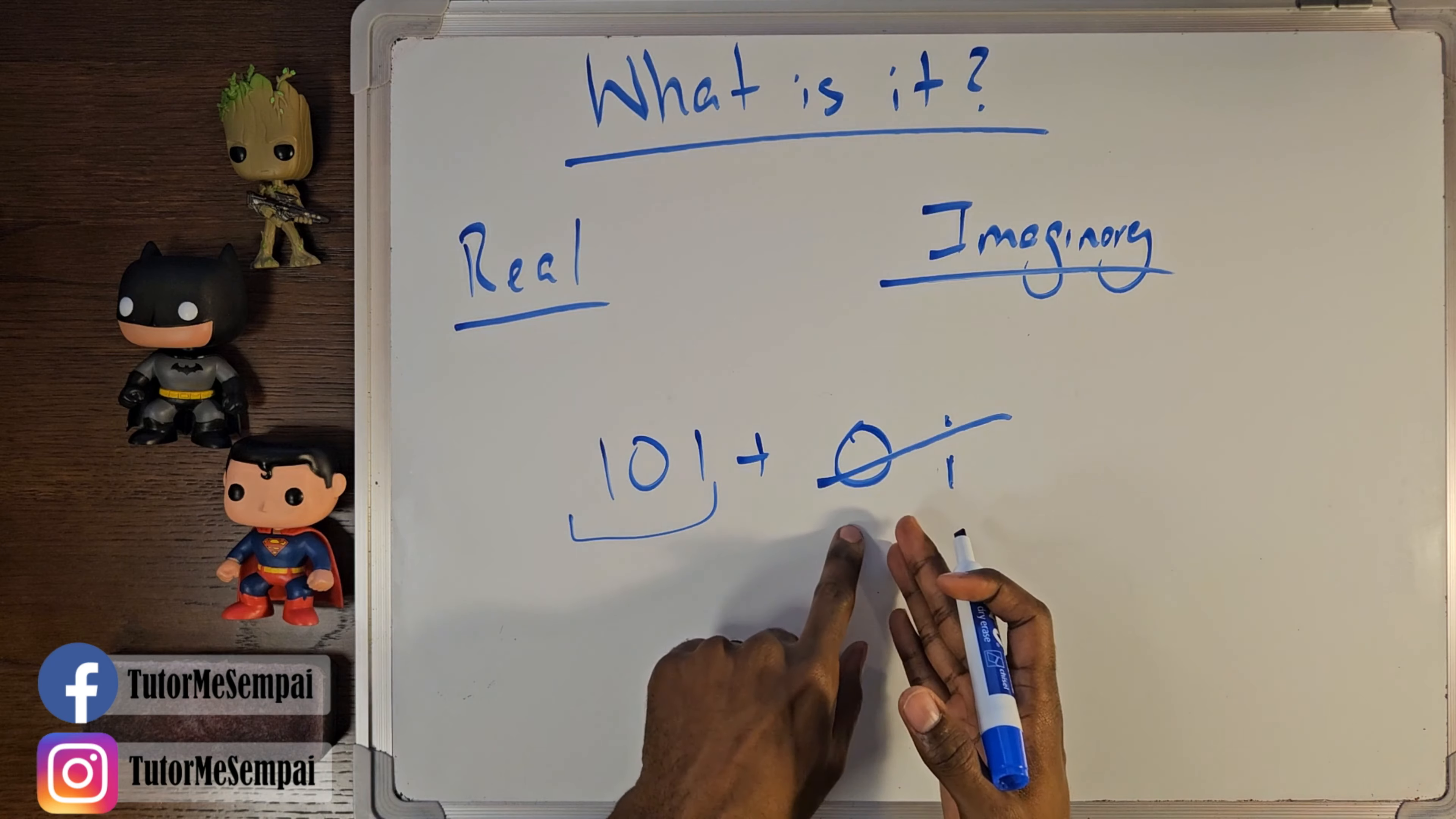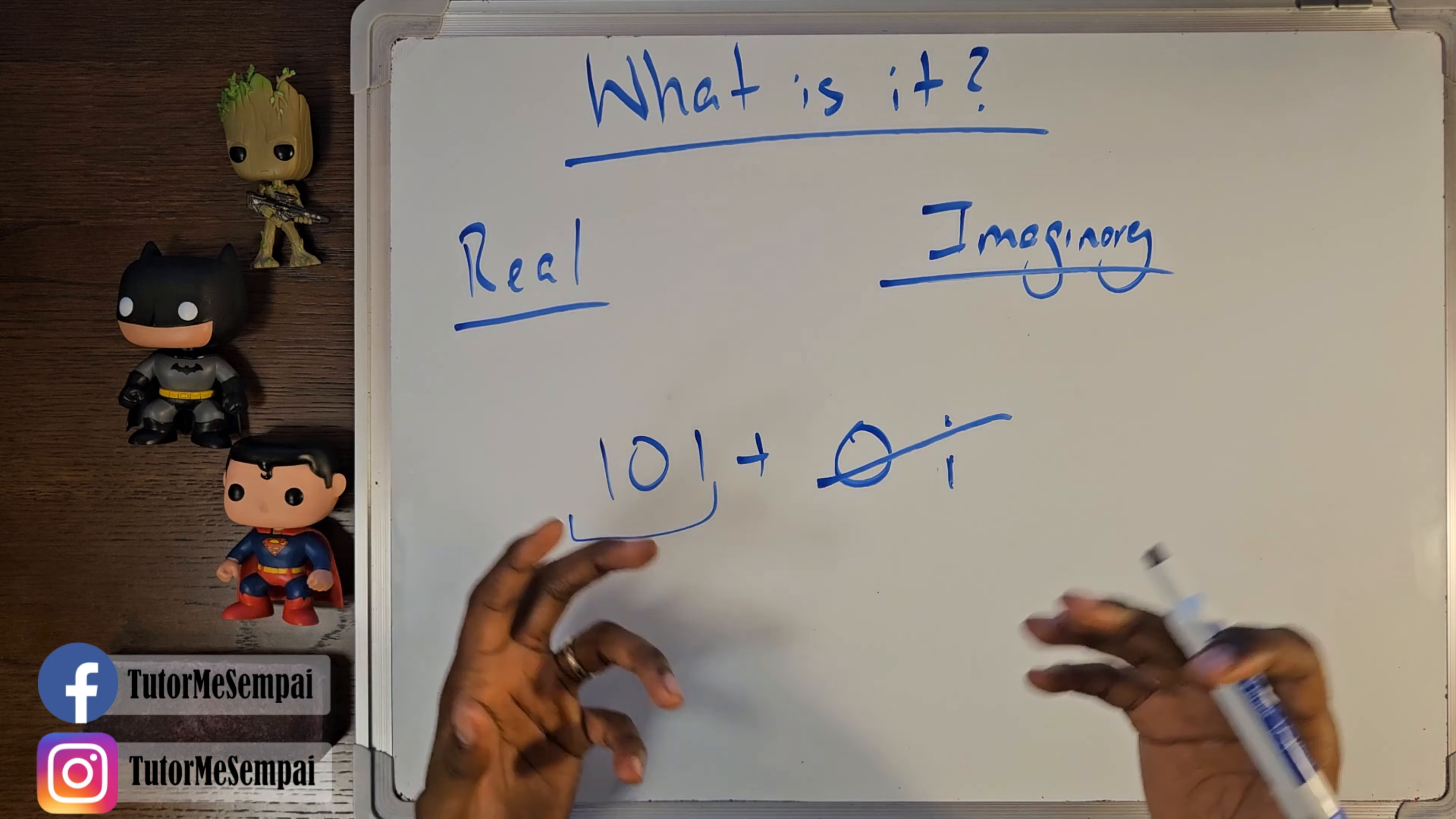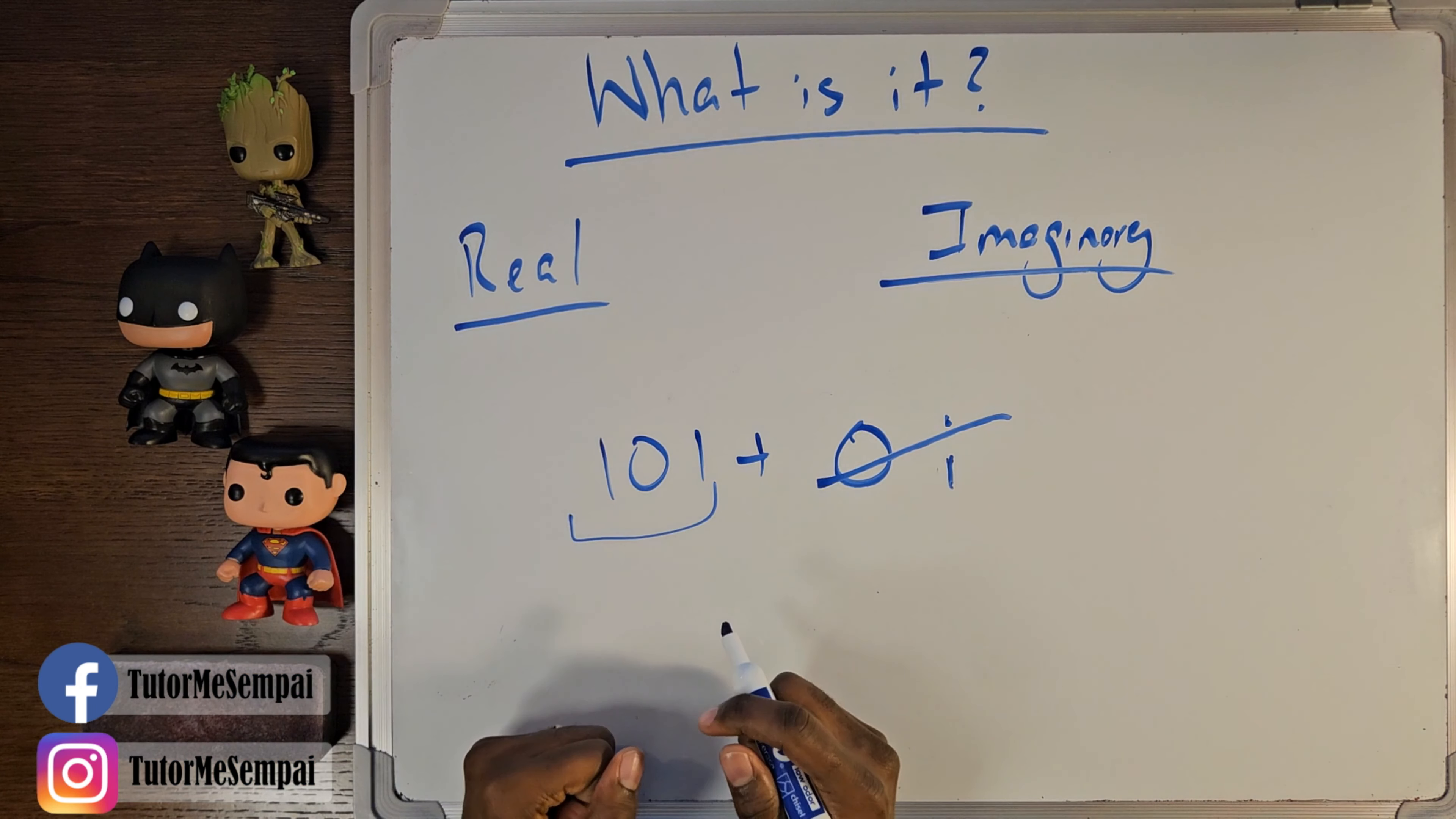And vice versa, your imaginary numbers will be pretty much complex numbers with a 0 for the real component. So that's just an extra bit of information so you can see how your complex numbers really do play a part in what we see today all around us, even if we're not quite aware of it. But now that we've talked a little bit about complex numbers in a very general sense, let's try to graph our complex numbers.